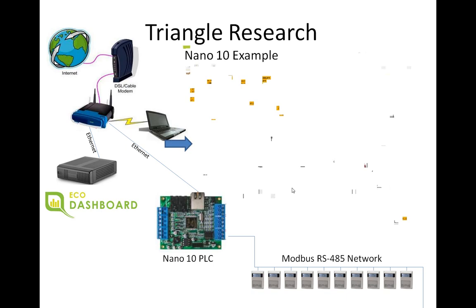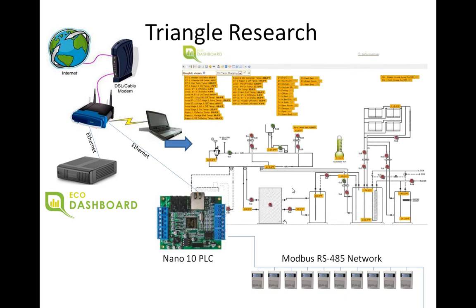The Eco Dashboard gives you a very powerful web interface where you can view live graphics of what's going on in the mechanical room, live temperatures. You can change all of the set points, and there's a whole host of features. To see all the features of the Eco Dashboard, you can go to infiniteautomation.com and look at some of the videos describing how that works, including one video that shows exactly how you configure the dashboard to connect with the Nano 10. And it's really, really easy.